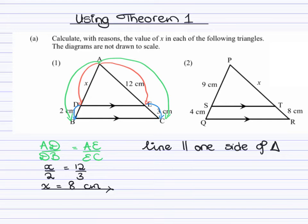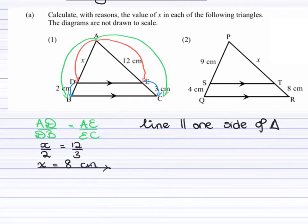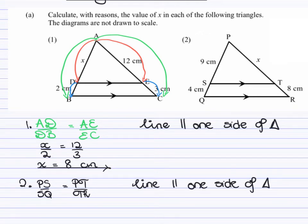Let us now solve for X in the second triangle. So we will use the same method we did for the first one. We want to compare the two sides. The first side that we're going to compare is PS divided by SQ. We know that this ratio would be equal to PT divided by TR. As we said, you would need a reason for this. And that reason would be line parallel to one side of triangle.